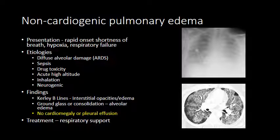Similar to cardiogenic edema, you can get Kerley B lines from interstitial edema and ground glass or consolidation from alveolar edema. Distinguishing it from cardiogenic edema, there is no cardiomegaly and no pleural effusion, and you typically treat it with respiratory support.